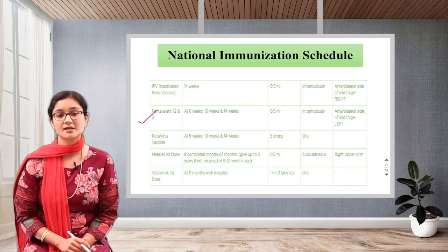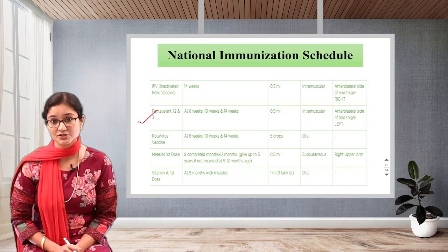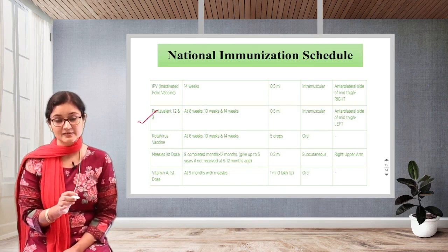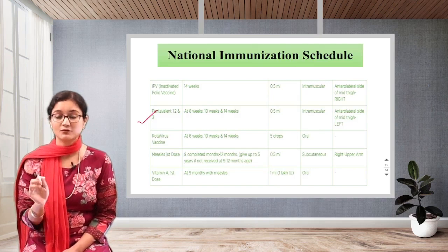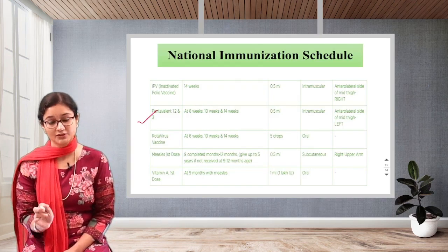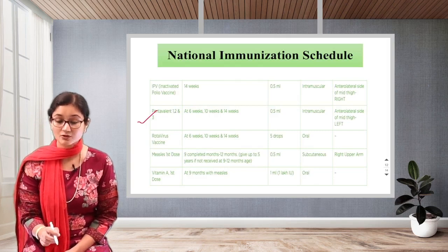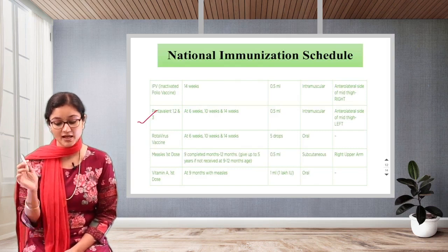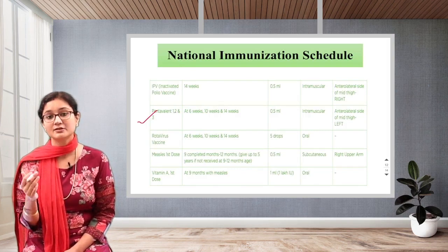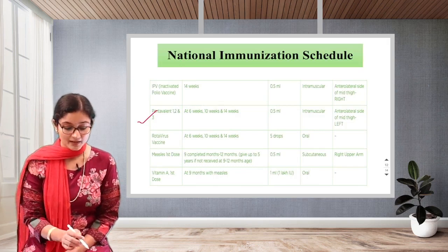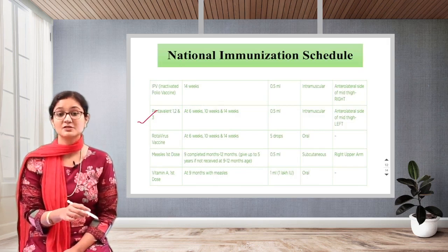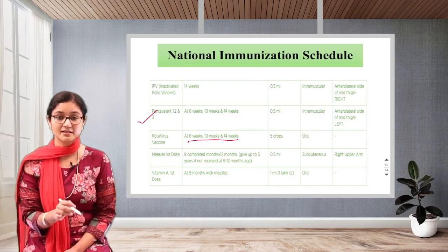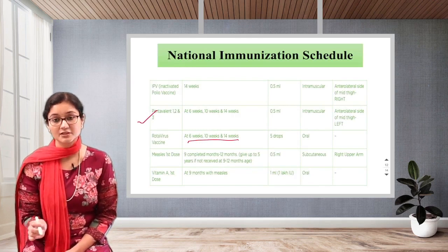Pentavalent vaccine — preventing those five diseases — is given as 1st, 2nd, and 3rd doses at the 6th, 10th, and 14th weeks. 0.5 ml given intramuscular at the anterolateral side of the mid-thigh on the left side. Rotavirus vaccine prevents severe diarrhea in children. Again, the same schedule: 6th, 10th, and 14th week — 5 drops given orally.